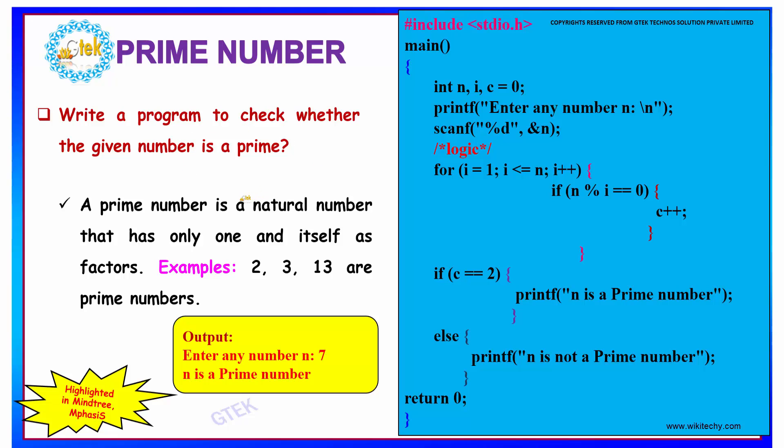We have to write a program to check whether the given number is a prime number or not. A prime number is a natural number that has only one and itself as factors.